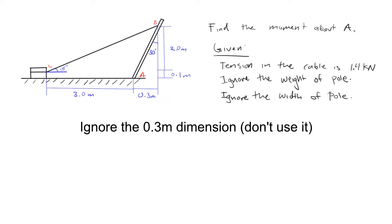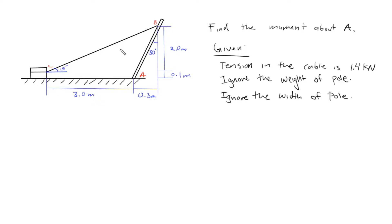In this problem we're told to find the moment about point A. Our goal is to define the angle at which this tension force is being applied. We're given that the tension in the cable is 1.4 kilonewtons, so we need to find this angle — I'll call it beta — so we know the direction of the tension force and can apply the concepts of moments about point A. The geometry in this problem is a little tricky.